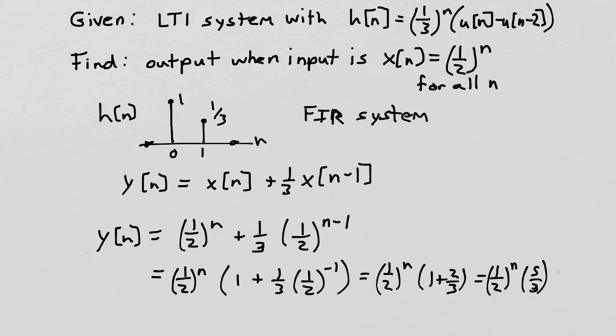Now, a couple of things that we can notice about this. One, we notice we put in a half to the n, and we got out a half to the n, scaled by a constant. And that is not an accident. It turns out that a half to the n is an eigenfunction of an LTI system. So when we put in an eigenfunction to the system, we should get out that same eigenfunction scaled by a constant. So that's not unexpected.